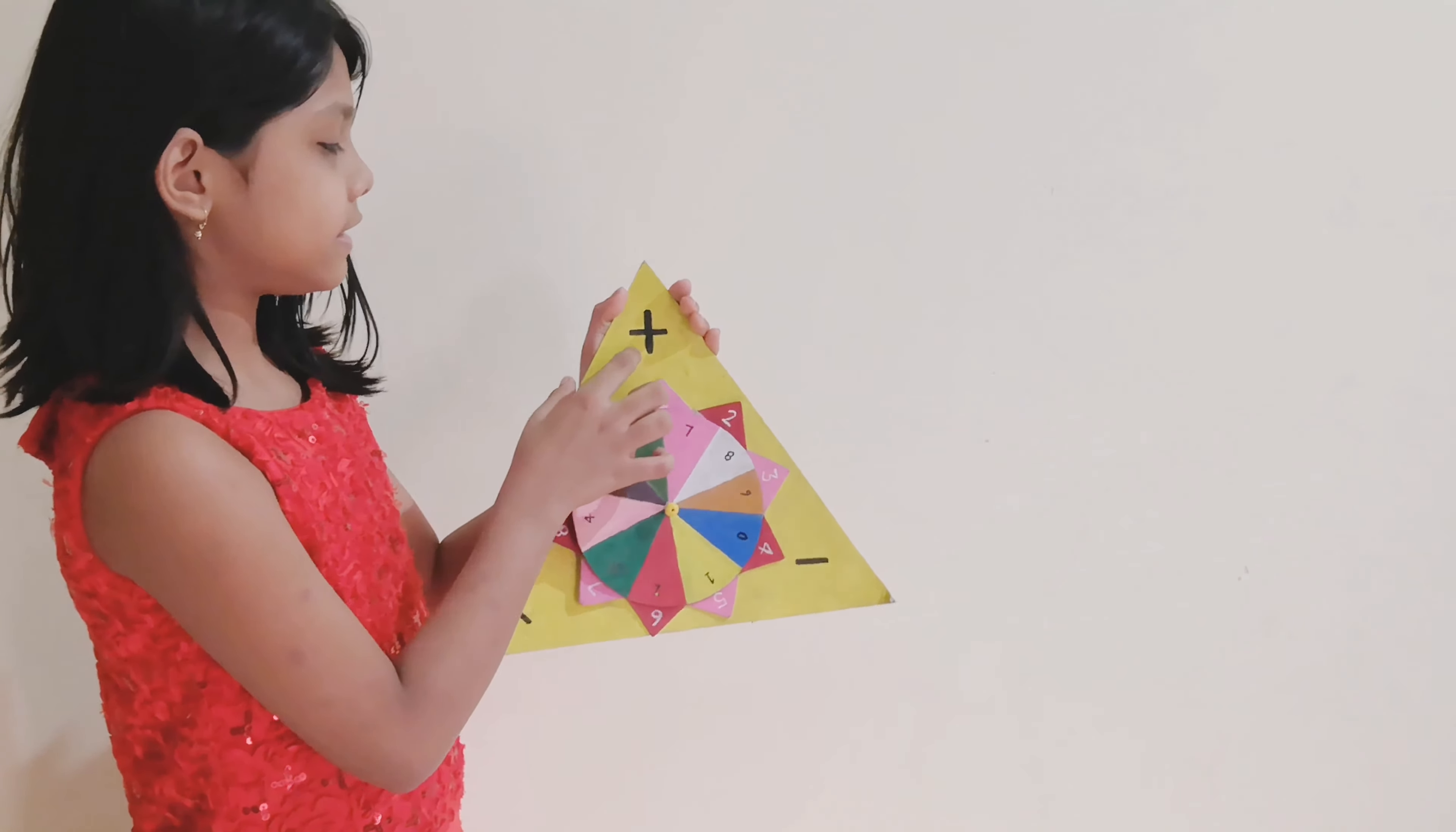We play this game like this: We spin the wheel, and then whatever number comes, we need to plus it, multiply it, or minus it. We need to know the three numbers we get.